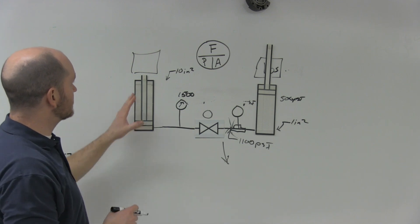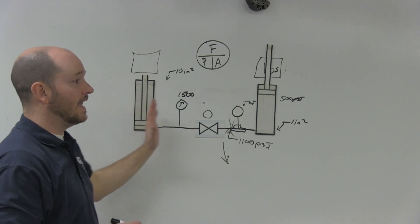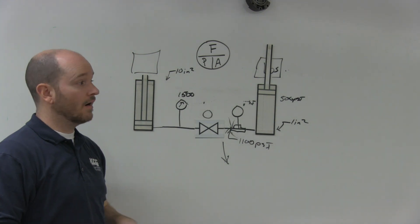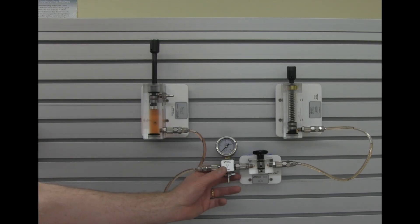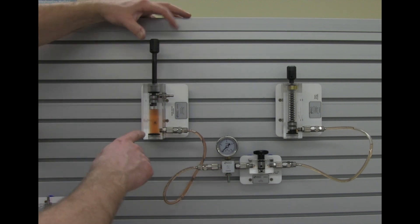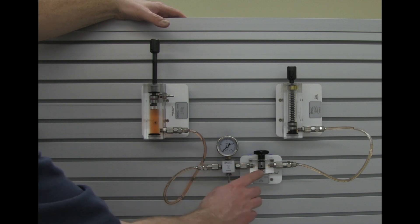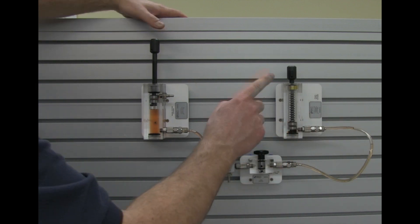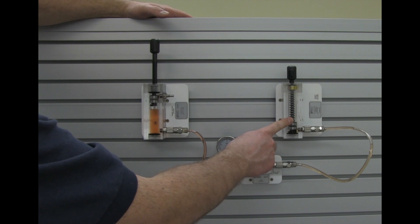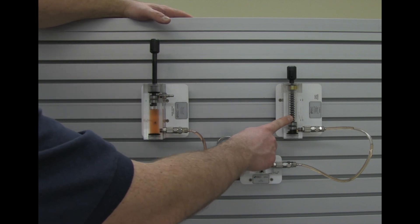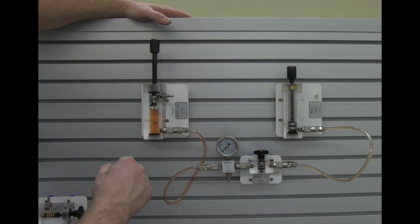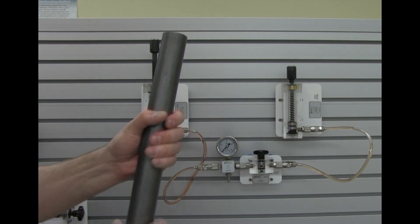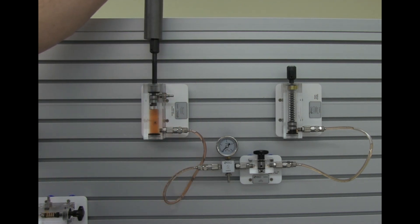The concept of understanding how much pressure is required to create flow is really important. Let me demonstrate this on our transparent hydraulic system. I have a double-acting cylinder filled with hydraulic oil, connected to a pressure gauge through a ball valve, going into a single-acting cylinder. This single-acting cylinder has a spring on it, which will be important in a moment.